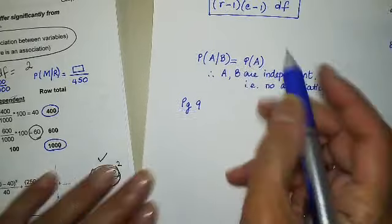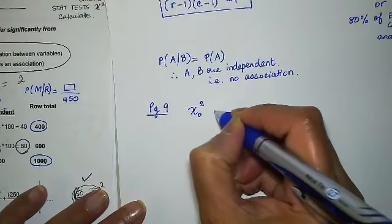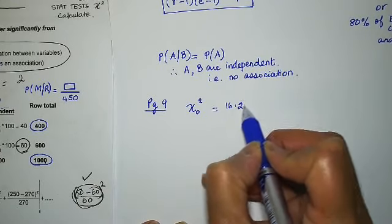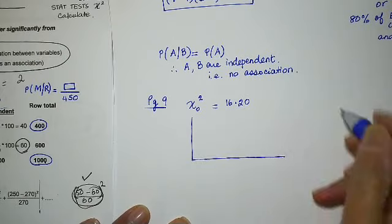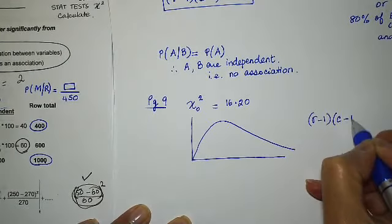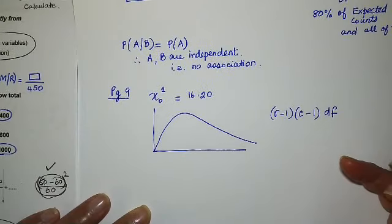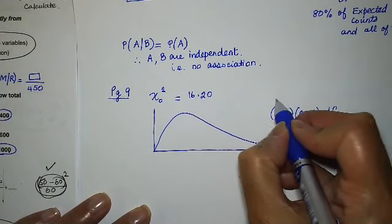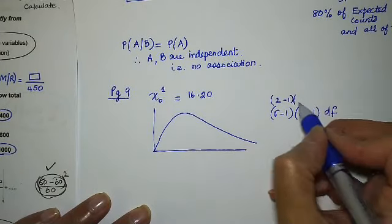Then, let's do it here. Page 9, was it? Page 9. The chi-naught square test statistic is equal to 16.20.